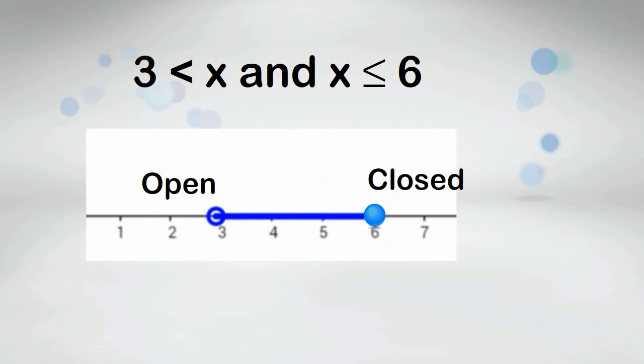3 is less than x and x is less than or equal to 6. The graph of this inequality will be between the two numbers because it uses AND.